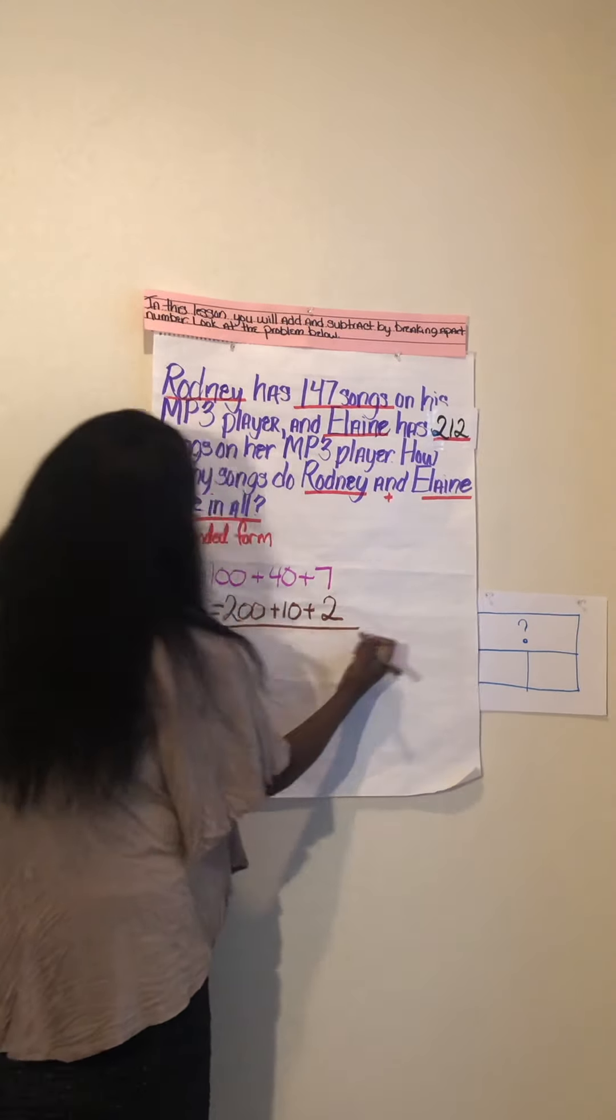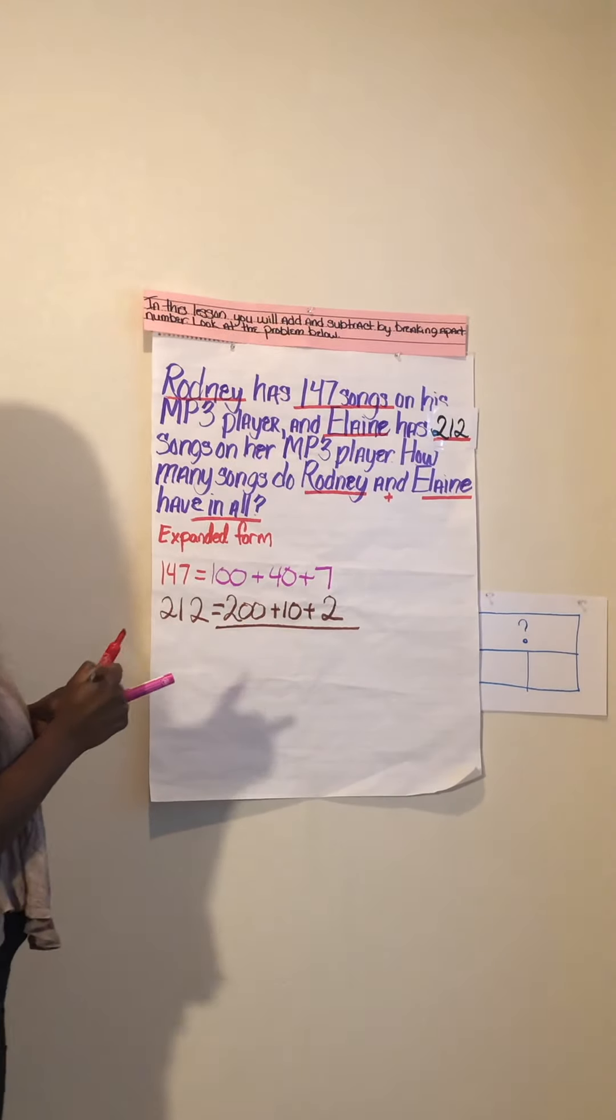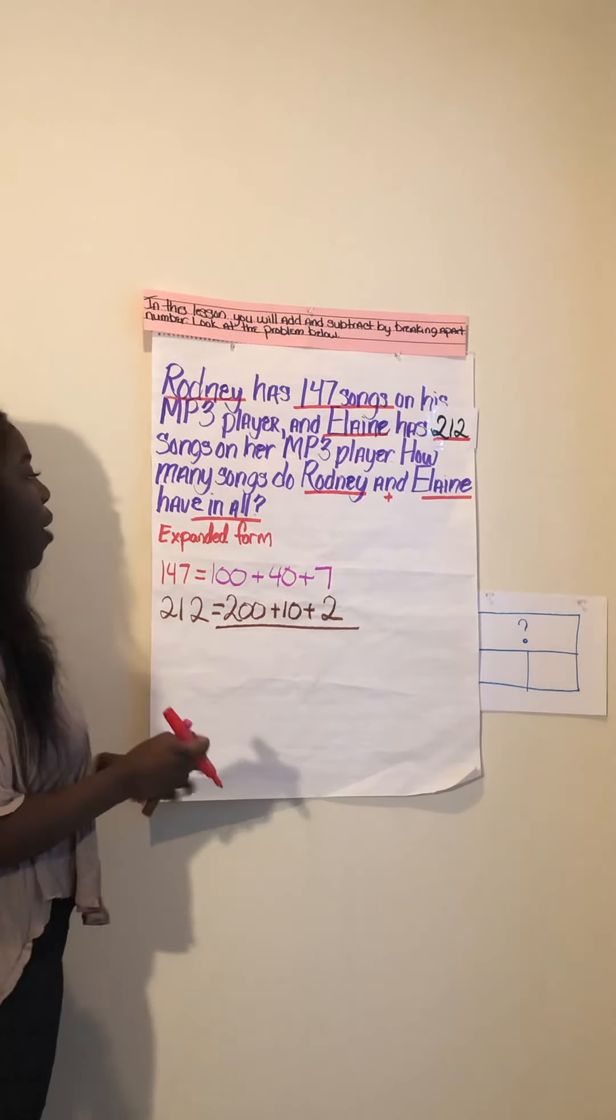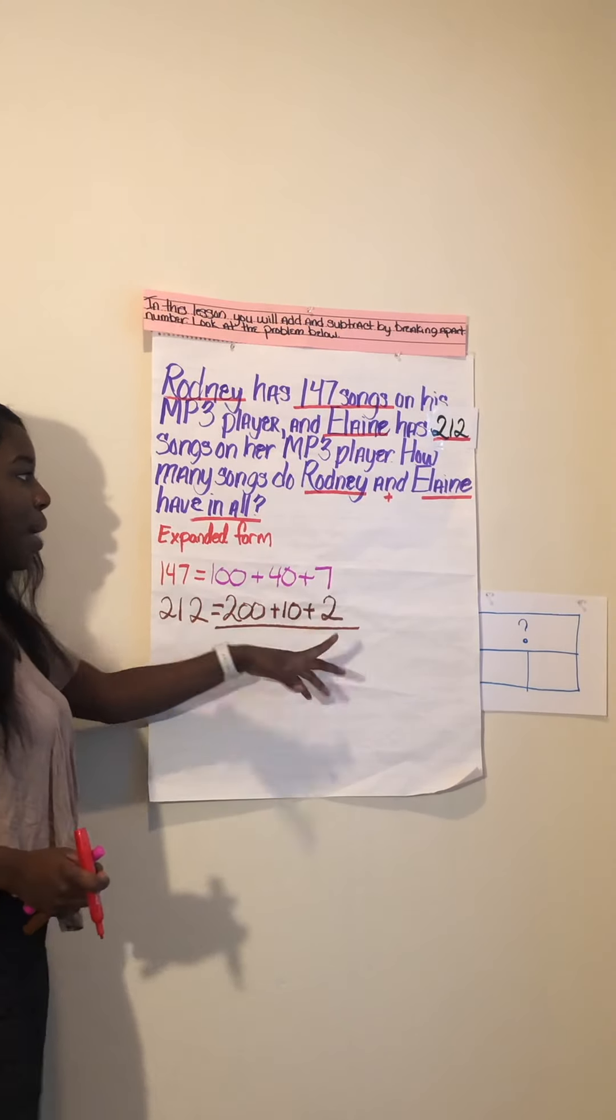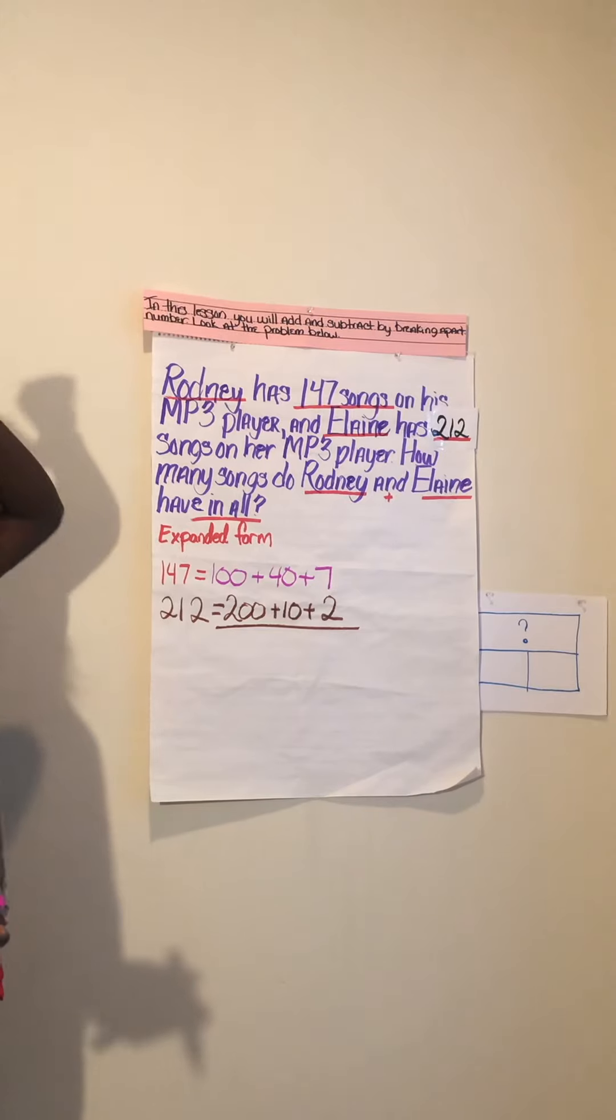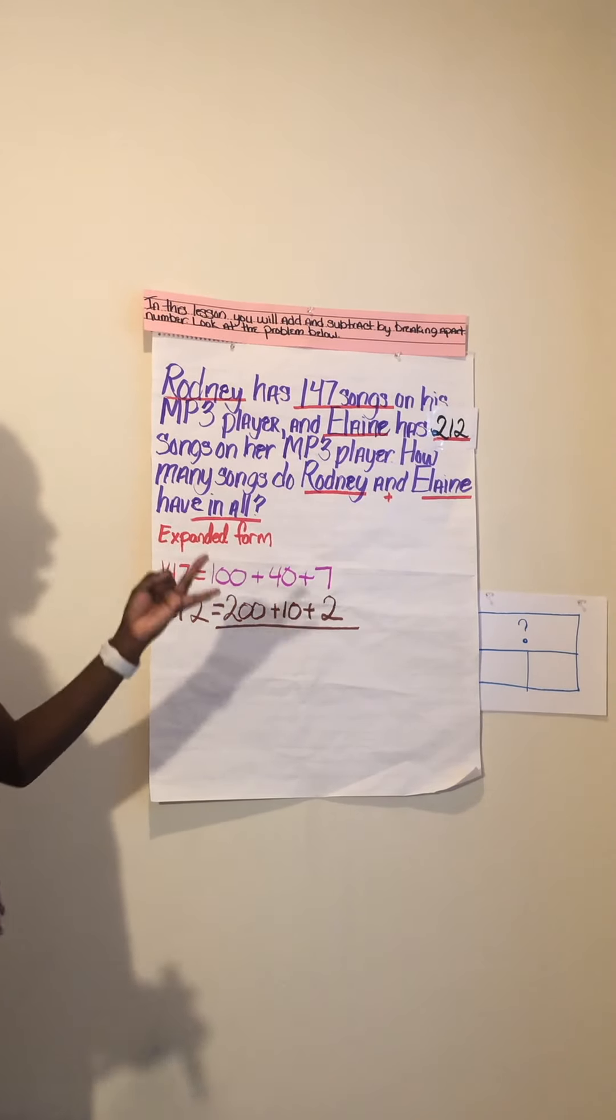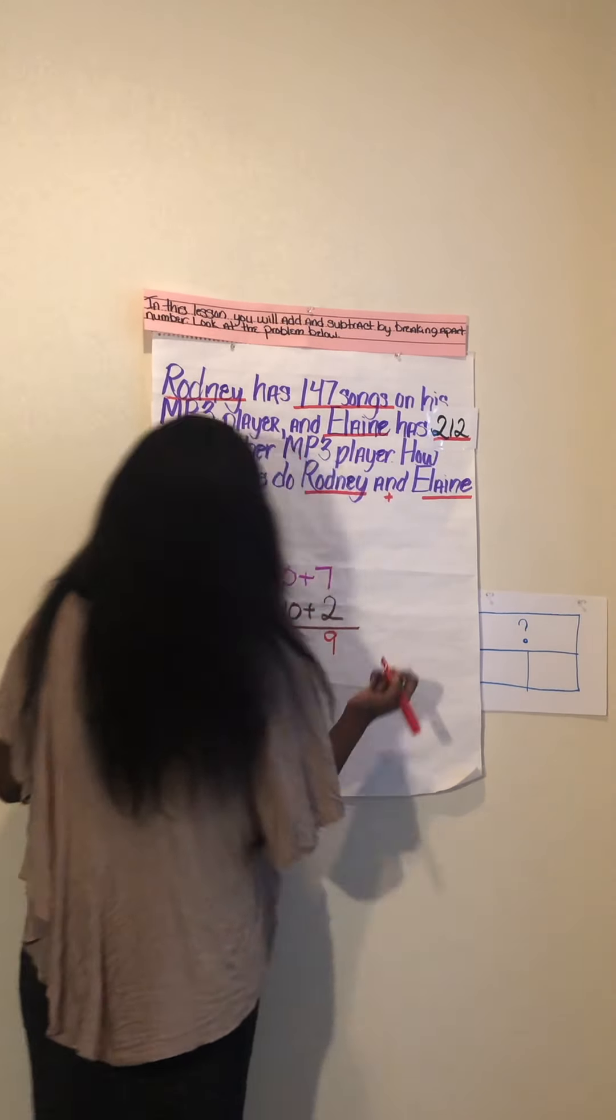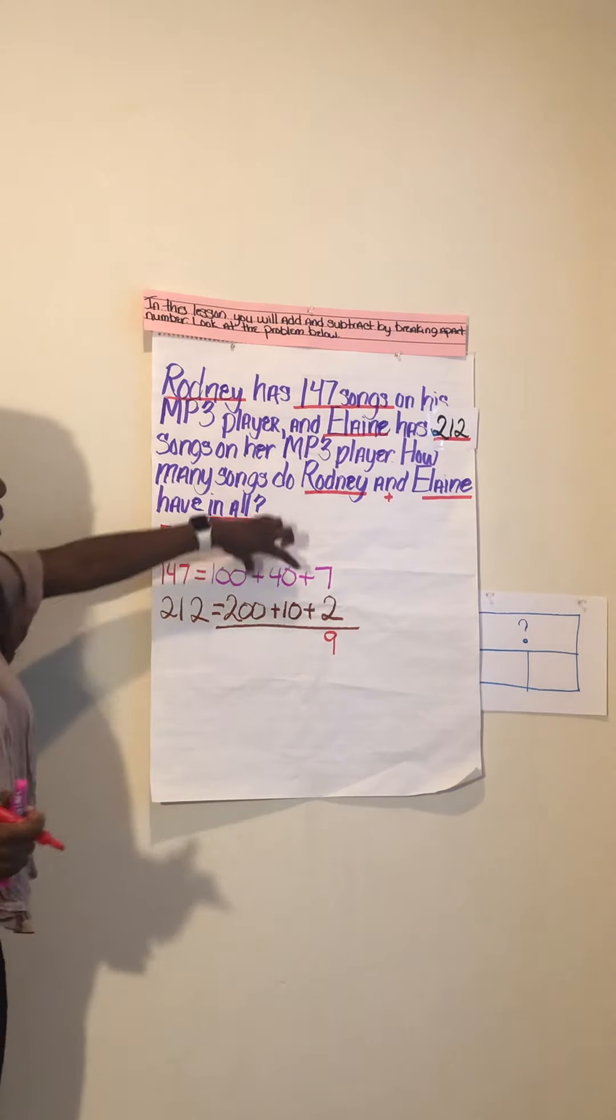So now I'm going to add them together to find out what the total is. First off we're going to add 7 plus 2. I put the biggest number 7 in my head and count up: 7, 8, 9. So right now we have 9 ones in the total.